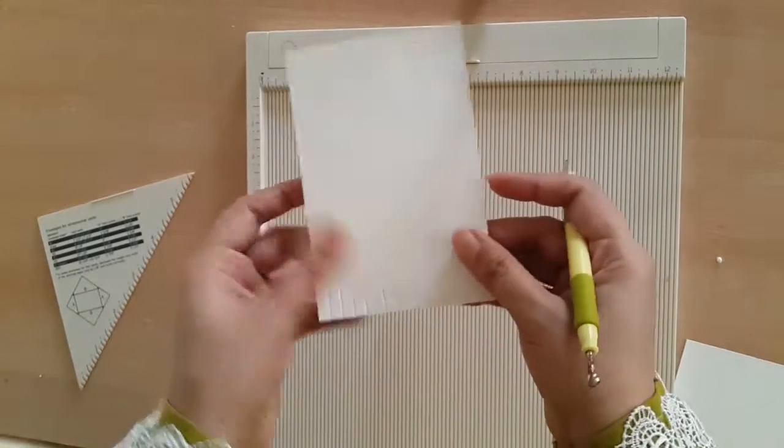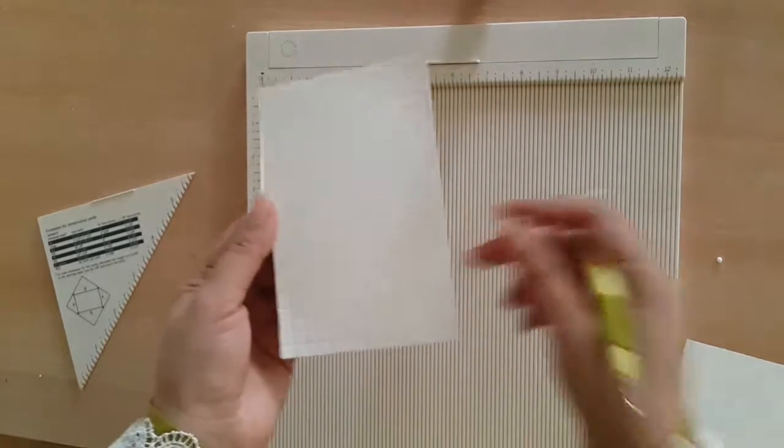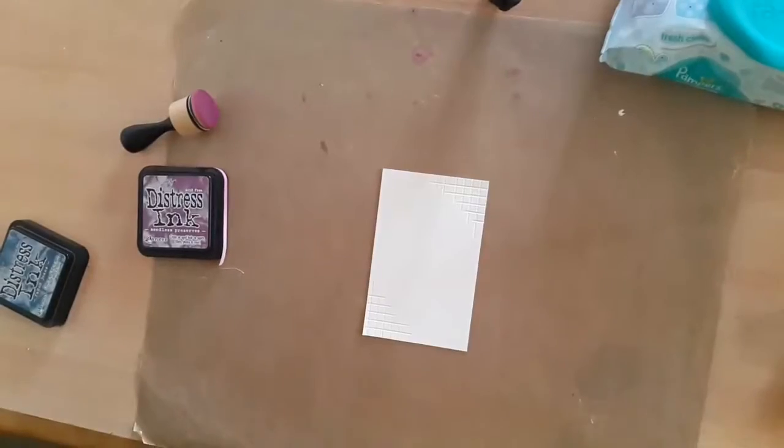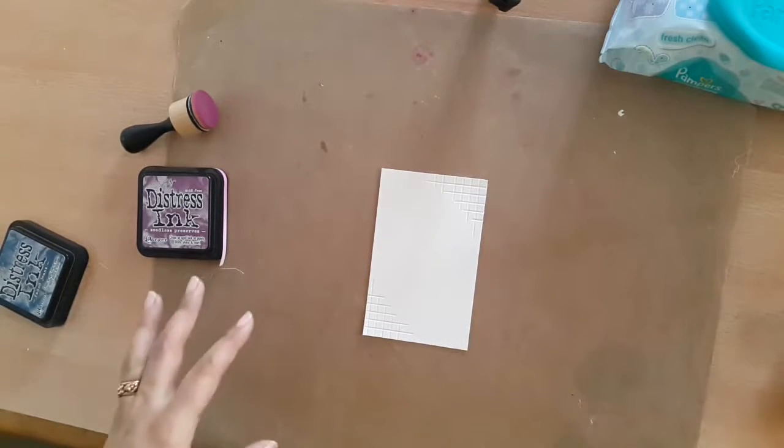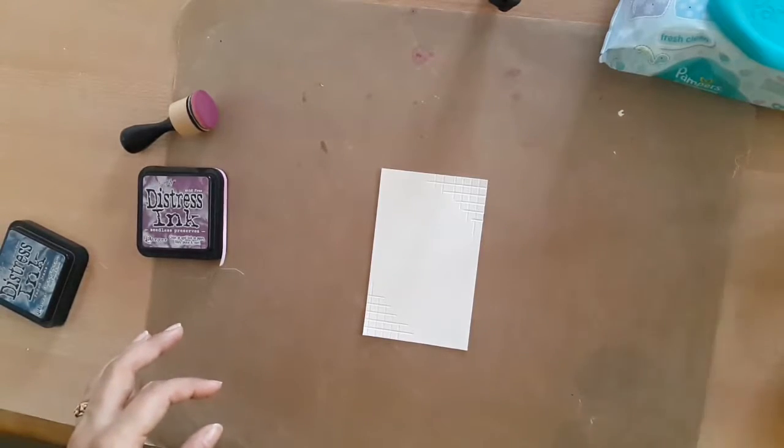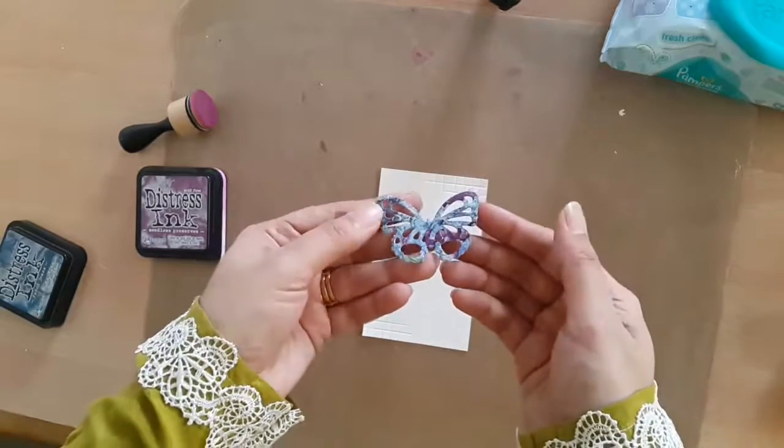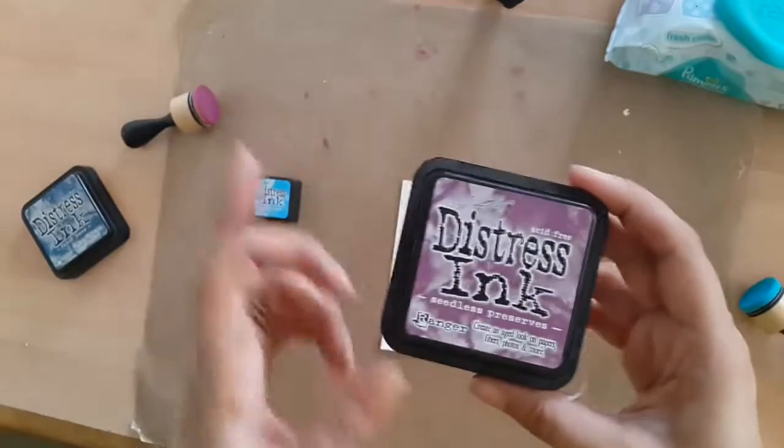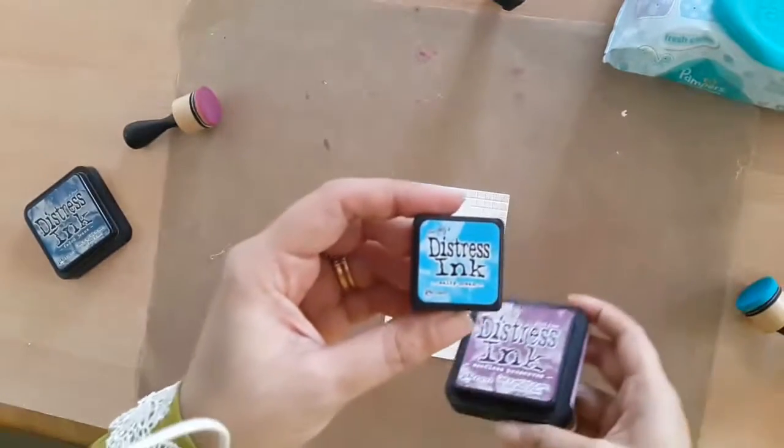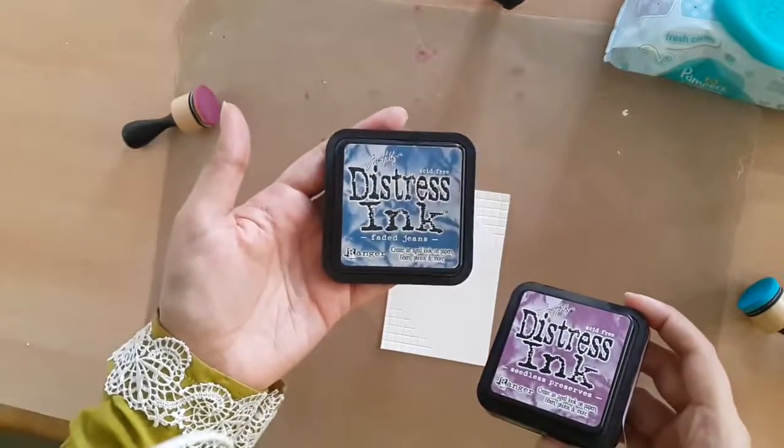Now I'm just going to ink this up so that I can show you how beautiful this design looks and how you can use this to make a card. For inking the cardstock, I have taken two colors that go with this butterfly element. This is a jelly-printed butterfly. I'm really into jelly printing these days. The colors will be Seedless Preserves and Salty Ocean.